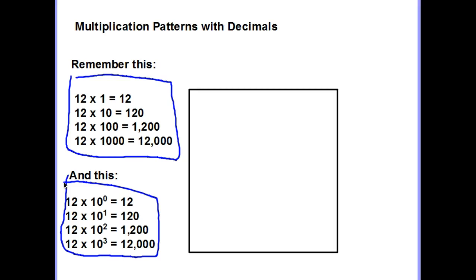These are things we've already learned: powers of 10. We've already learned about powers of 10 and how we can take the basic fact — 12 times 1 is 12 — and every time the power of 10 went up by 10, 100, 1000, that changed what our product was going to be based on the number of zeros. We also looked at exponents, determining what happens to our basic fact of 12, and each time the exponent increased, the number of zeros increased.